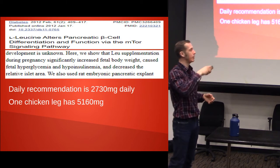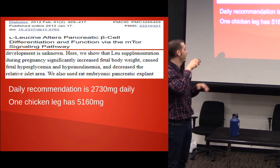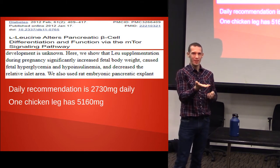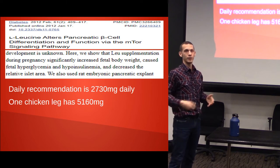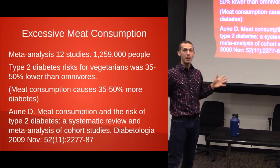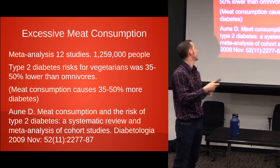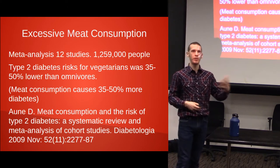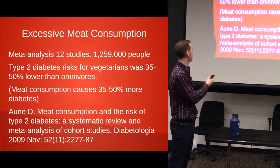The daily recommended amount of leucine is 2,730 milligrams daily. One chicken leg has 5,160 milligrams of leucine. So one serving of meat a day is already exceeding the levels of leucine we should have, and we know leucine is associated with diabetes. A meta-analysis of 12 different studies involving 1,259,000 people showed that type 2 diabetes risk for vegetarians was 35–50% lower than for omnivores. In other words, meat consumption causes 30–50% more diabetes. From Diabetologia 2009. From Diabetes Care: a quarter pound of beef raises insulin levels in diabetics as much as a quarter pound of straight sugar. Cheese and beef elevate insulin levels higher than high-carb foods like pasta.